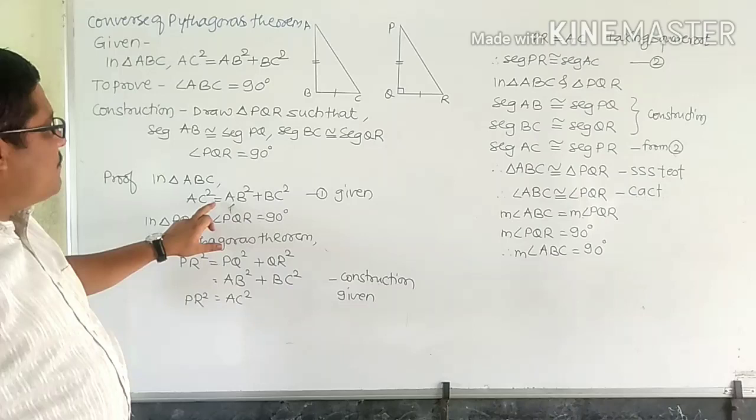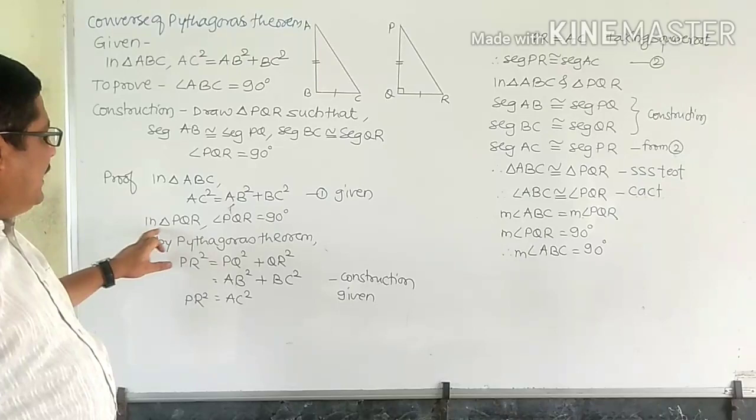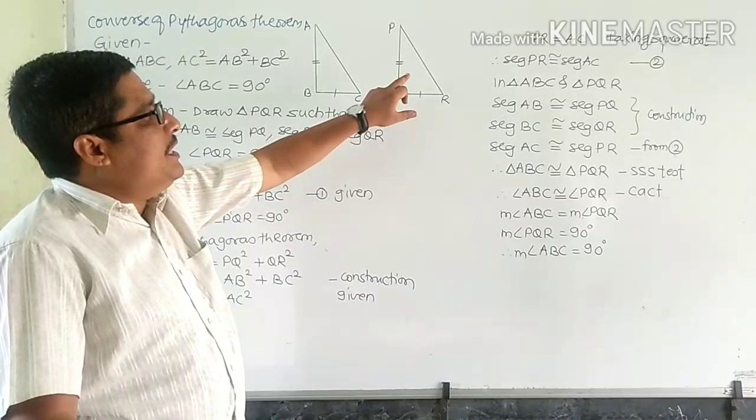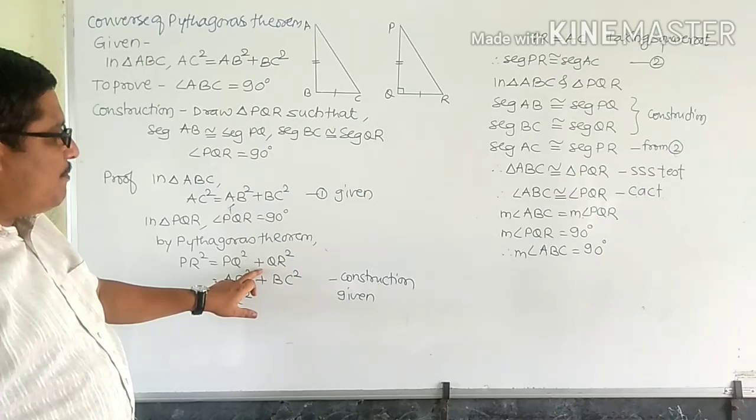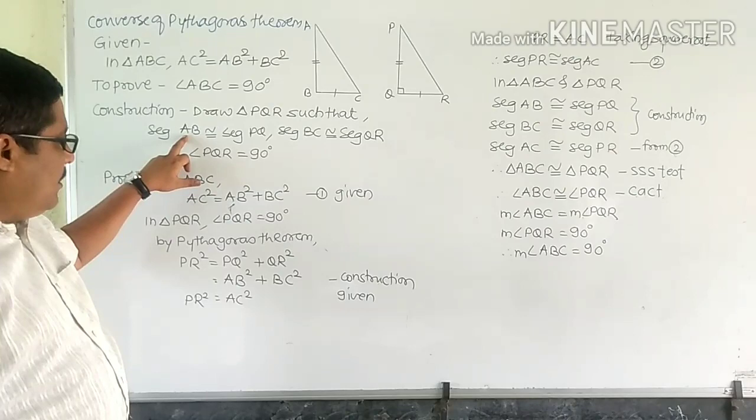In the proof, in triangle ABC, it is given that AC² = AB² + BC². Now, in triangle PQR, since triangle PQR is a right angle triangle, we can use Pythagoras Theorem for triangle PQR. So by using Pythagoras Theorem, we can write PR² = PQ² + QR².